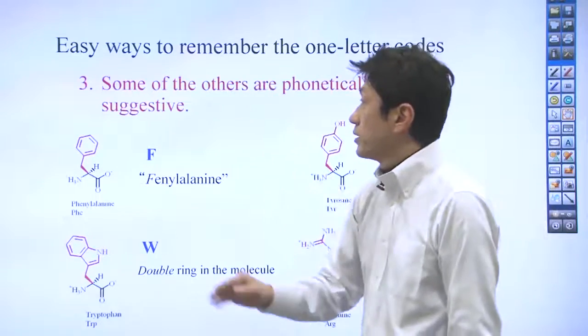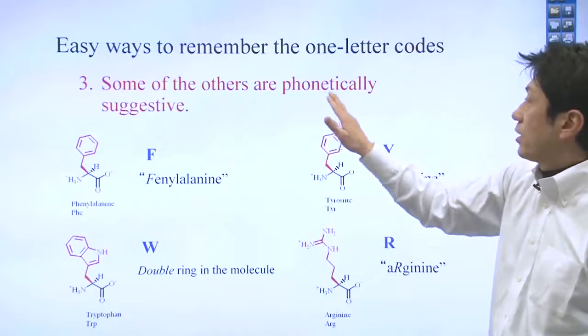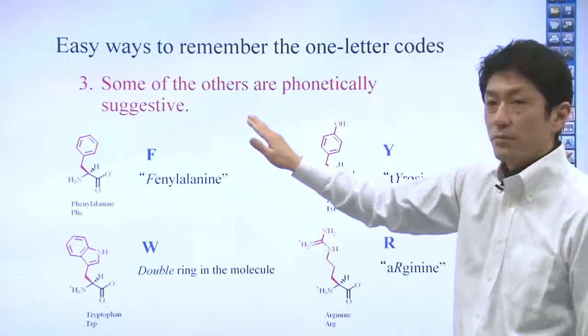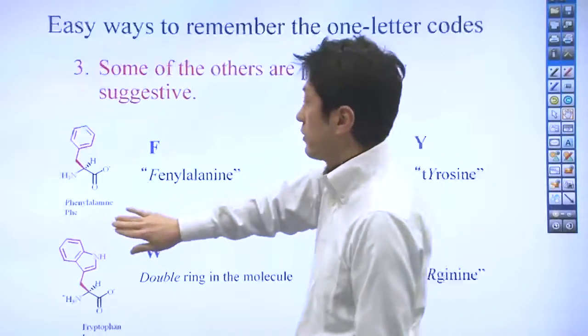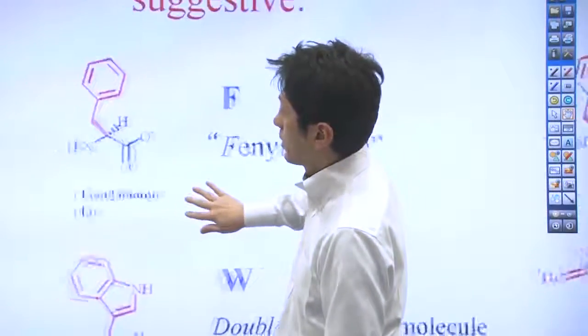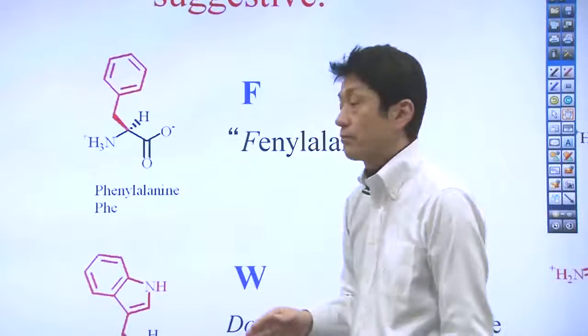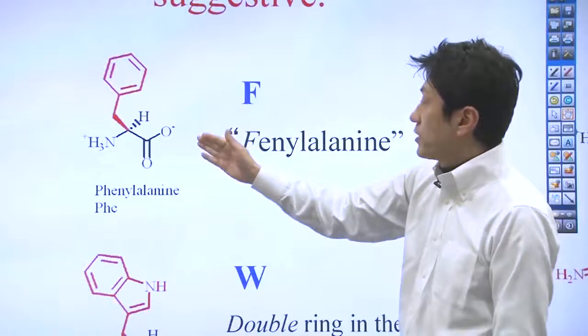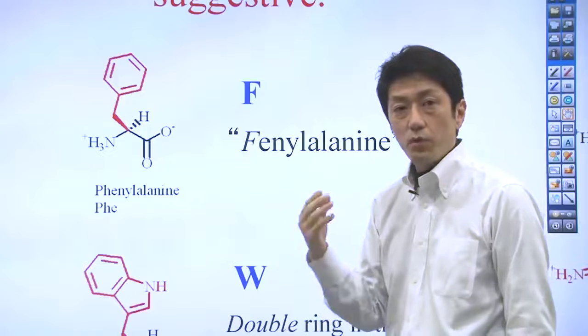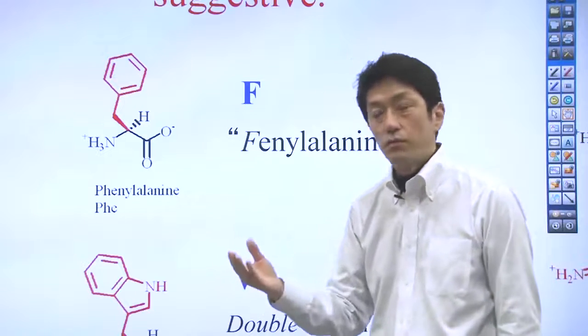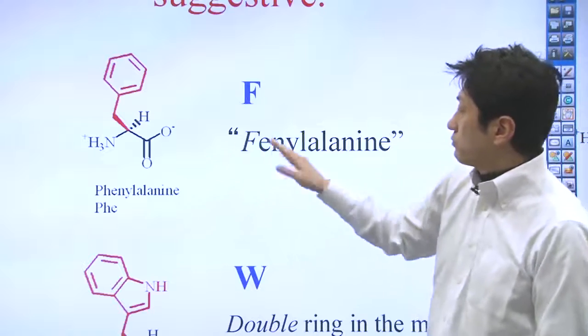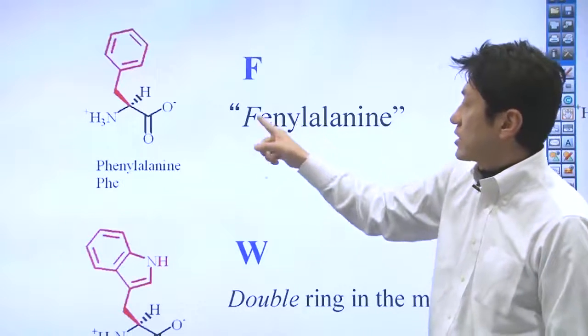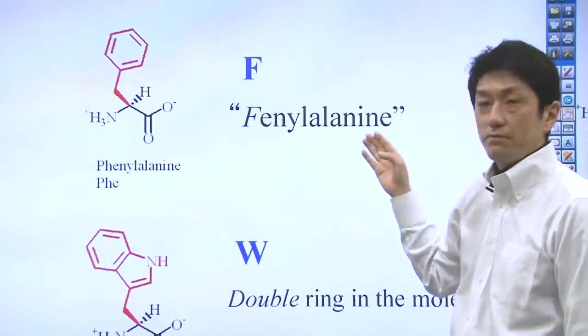Number three. Some of the others are phonetically suggestive. These are harder to remember. Here's the structure of phenylalanine. Phenylalanine has an aromatic structure right here. Phenylalanine starts with P, but we use P for proline. That's why we can't use P for phenylalanine. We use F. F is phonetically suggestive. Phenylalanine.